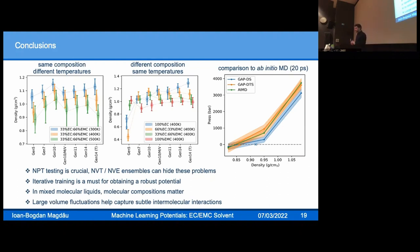What we've learned: NPT testing is crucial. NVE, NVT ensembles can sometimes hide these problems, especially if cells are small. If you have a large enough cell, locally those bits of liquids can still behave like NPT and you might see pathologies reflected in correlation functions. Iterative training is a must for obtaining a robust potential in mixed molecular liquids. There's this additional complication of molecular compositions. You have to make sure that to describe the correct distribution for a large enough cell, you need to sample at many different local compositions with smaller cells. Large volume fluctuations help capture subtle intermolecular interaction. This is really nice because we can do this without baselining, without separating intra-inter scales, which opens the door to go to a reactivity regime.